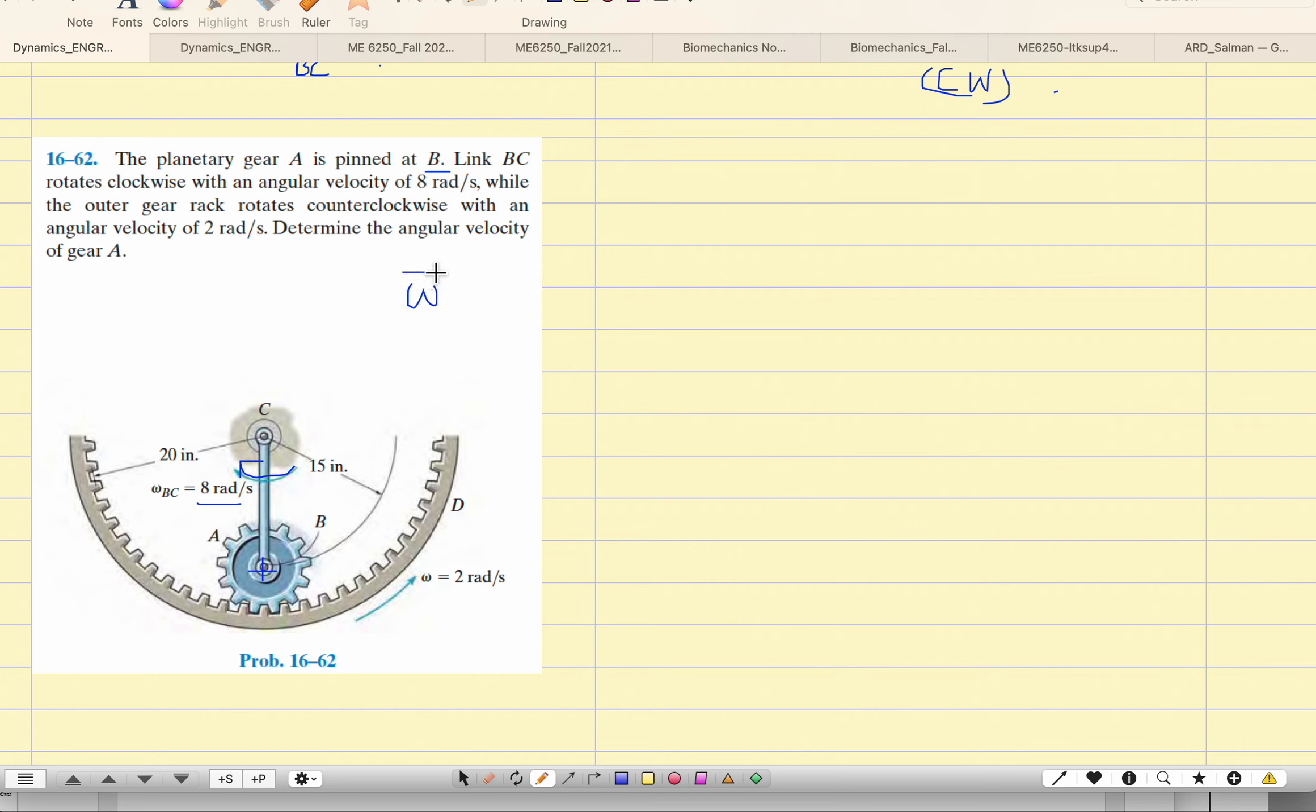Can I write down omega of link BC as 8 negative K? And then the question is, while the outer gear rotates counterclockwise, this is the outer ring gear. So it is counterclockwise. So it is to determine the angular velocity. We have to find out omega A. How do you find out omega A?